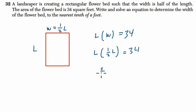L times L is L squared, so one half L squared is 34. Solving for L, I double both sides, and L squared equals 68. And then L is the square root of 68.